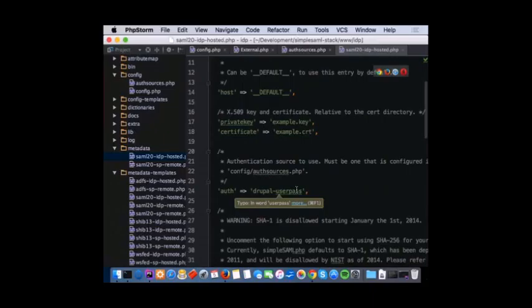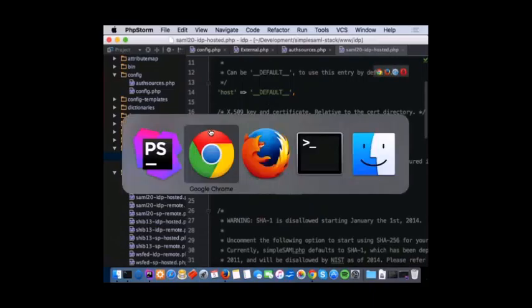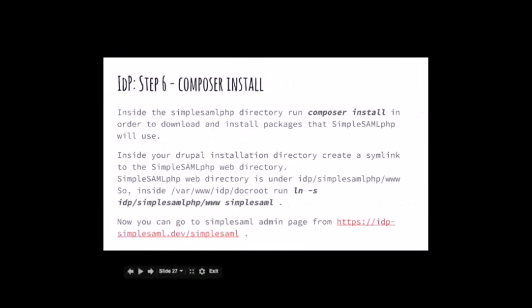After that, I need to run Composer install to download some packages that SimpleSAMLphp is going to use. After that, I create a symlink on the doc root folder — under the Drupal installation — to the WEB folder, so I can have access to the SimpleSAML admin interface from my Drupal site. Let's have a look. So this is my Drupal site — this is my identity provider — and this is the admin interface for SimpleSAMLphp.